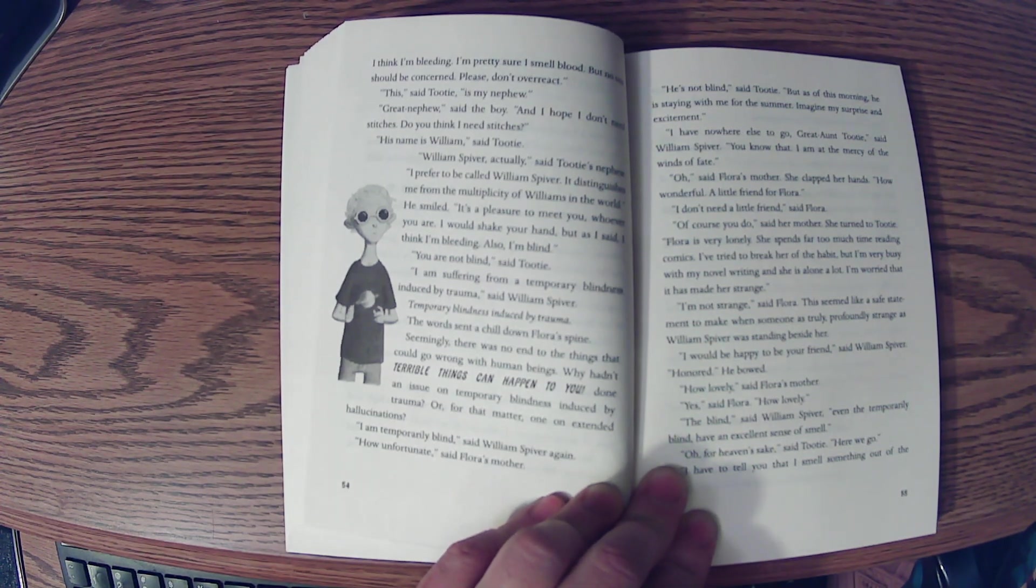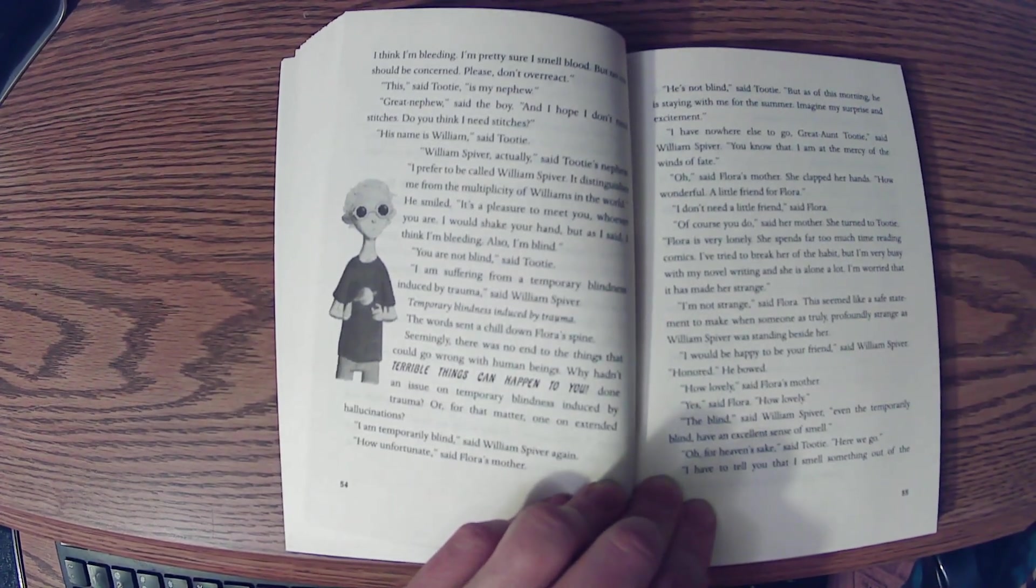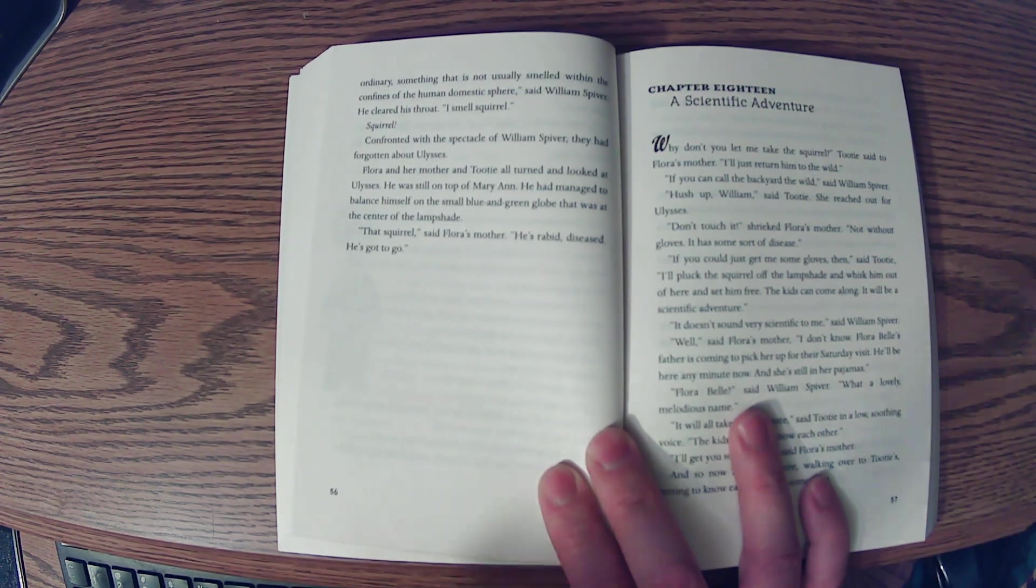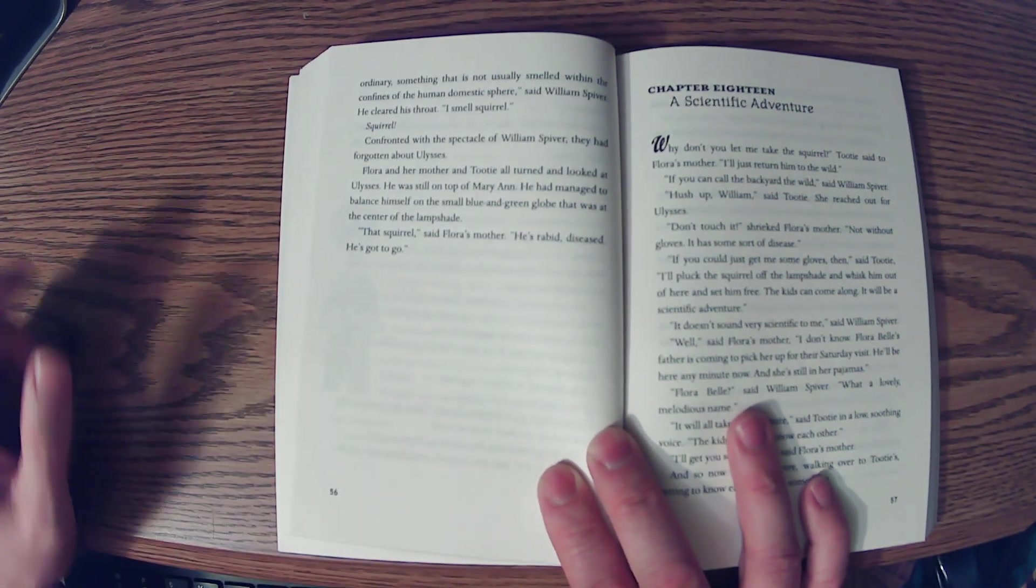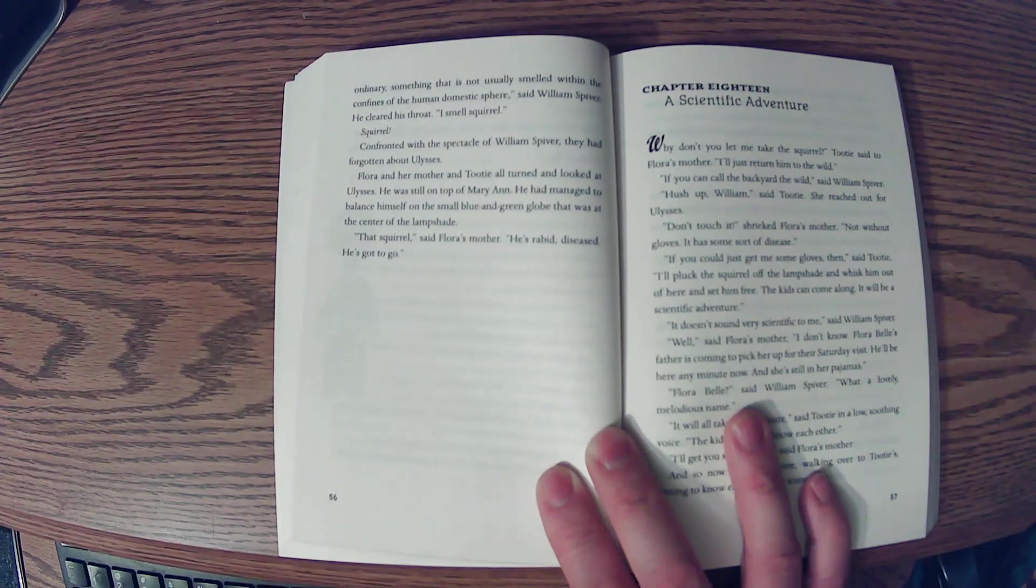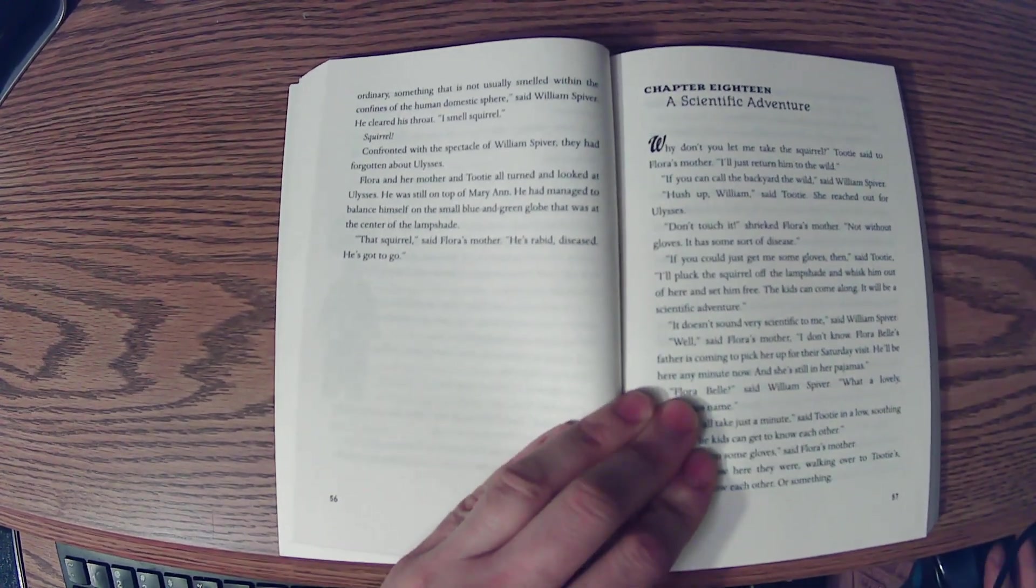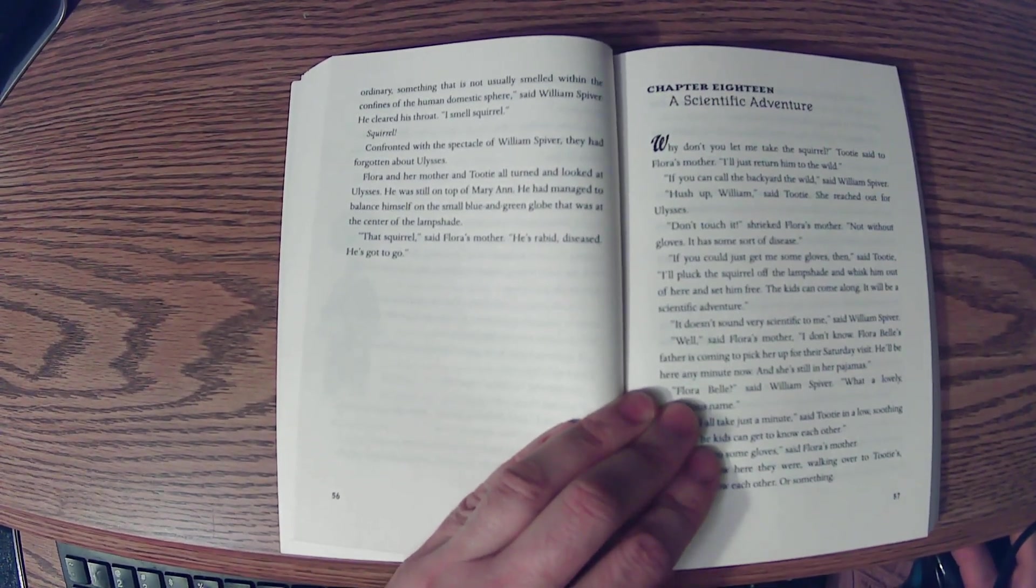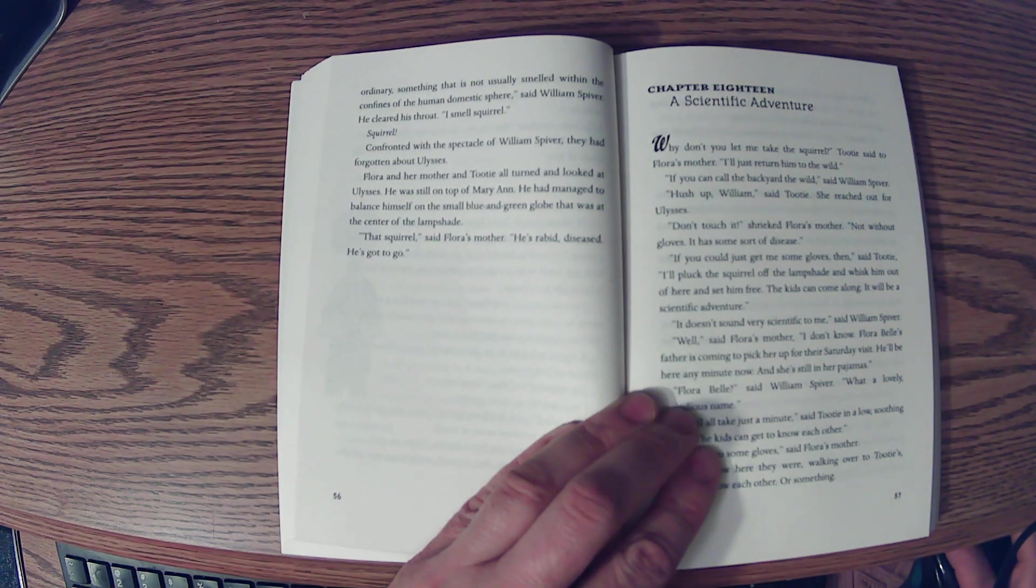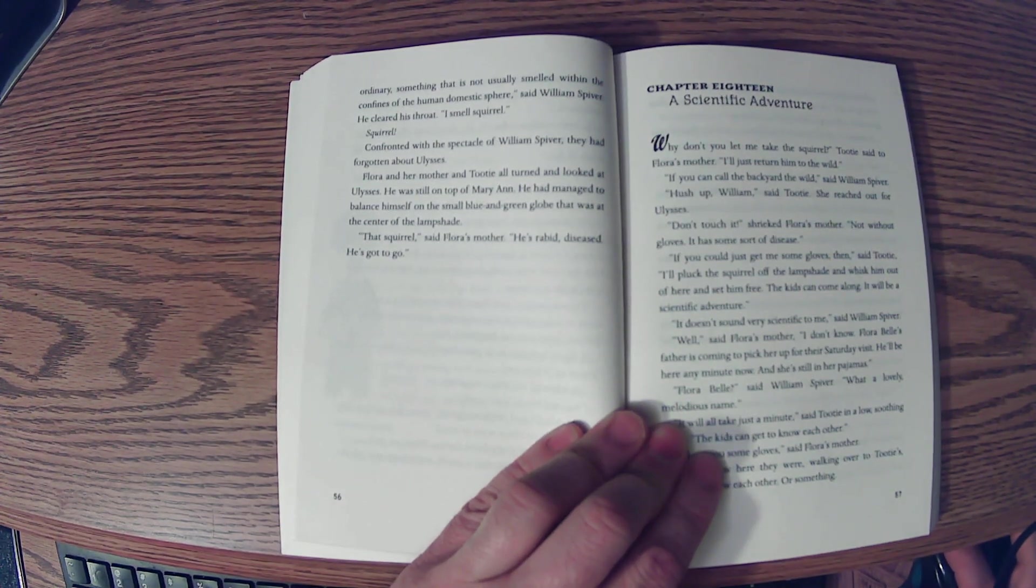The blind, said William Spiver, even the temporarily blind, have an excellent sense of smell. Oh, for heaven's sake, said Tootie. Here we go. I have to tell you that I smell something out of the ordinary, something that is not usually smelled within the confines of the human domestic sphere, said William Spiver, and he cleared his throat. Ahem, I smell squirrel. Squirrel. Confronted with the spectacle of William Spiver, they had forgotten about Ulysses. Flora and her mother and Tootie all turned and looked at Ulysses. He was still on top of Marianne. He had managed to balance himself on the small blue and green globe that was at the center of the lampshade. That squirrel, said Flora's mother, he's rabid, diseased. He's got to go.